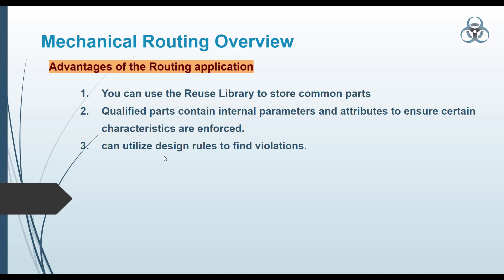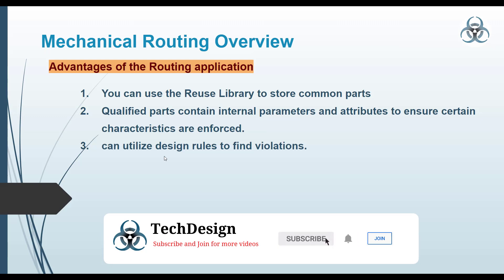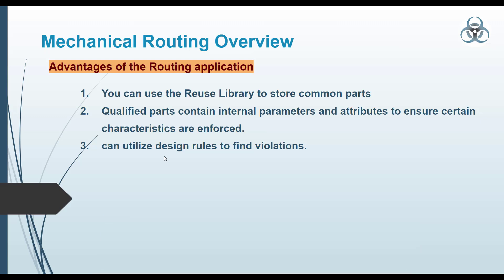Now let's look at the advantages of routing applications. You can reuse a library to store common parts. When working on a mechanical routing assembly, standard components such as elbows, tees, and other standard parts can be saved in a library and reused whenever required. Also, qualified parts contain internal parameters and attributes to ensure certain characteristics are enforced. These are standard parts with predefined parameters, so when you import standard mechanical parts into an assembly, NX is able to understand their characteristics and how they behave in the assembly.